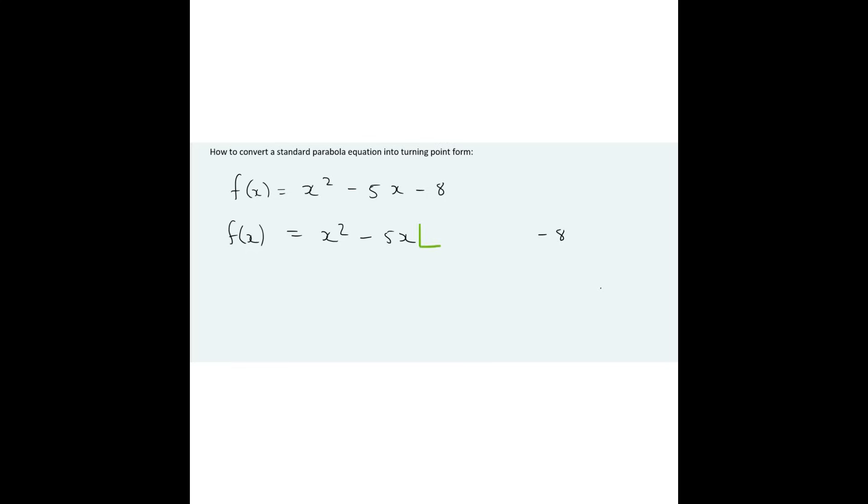We've got everything the same. Then in the middle over here, we're going to do a few things. We're going to add whatever this number is over 2. So it's going to be like that. Then you square it, but then you also minus the same thing. So it's minus 5 over 2 squared.